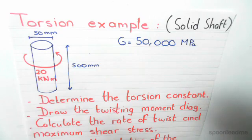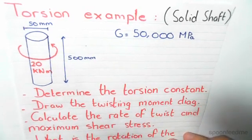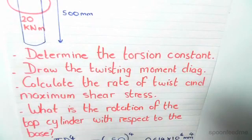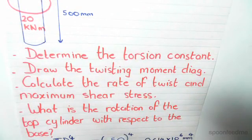So a positive moment. We're given a shear modulus of 50,000 MPa. We're asked to determine the torsion constant, draw the twisting moment diagram, calculate the rate of twist and maximum shear stress, and find the rotation of the top cylinder with respect to the base.